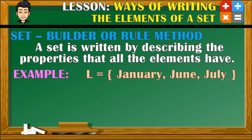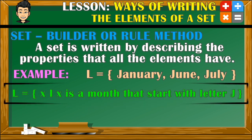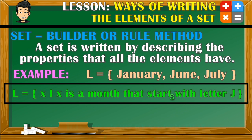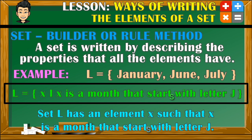Now let's have this example. Set L has the following elements. Looking at the elements, we can say that they are all months that start with letter J. But it is not enough to say that they are just months, because if we say so, then why is April not included in this given set? So this is what you have to remember: you must always be specific in describing the elements of a set when you represent them in set builder or rule method. So in this example, set L will be represented like this. Set L has an element x such that x is a month that starts with letter J.